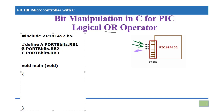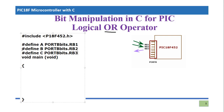Similarly we define: #define B PORTBbits.RB2 and #define C PORTBbits.RB3. The effect on the code is that instead of using these long keywords, we can simply use A, B, and C. Now let's go to the code and inside void main(void) we will use these simple names.